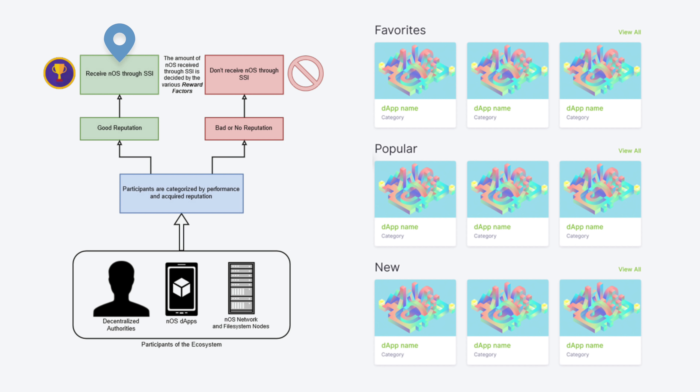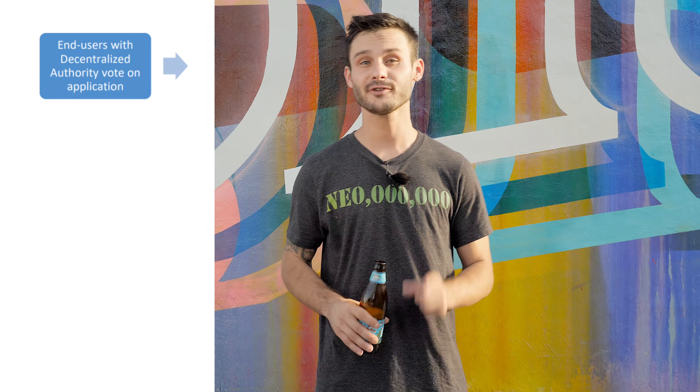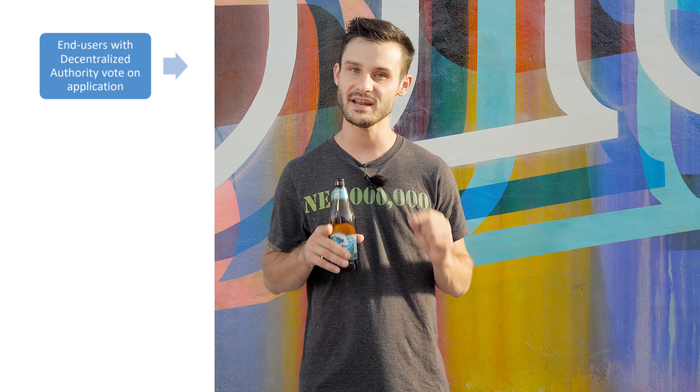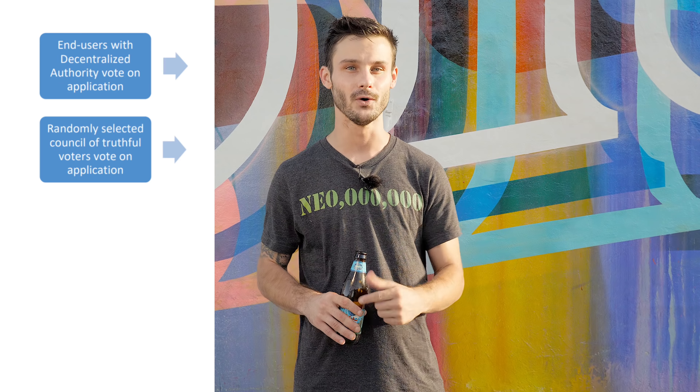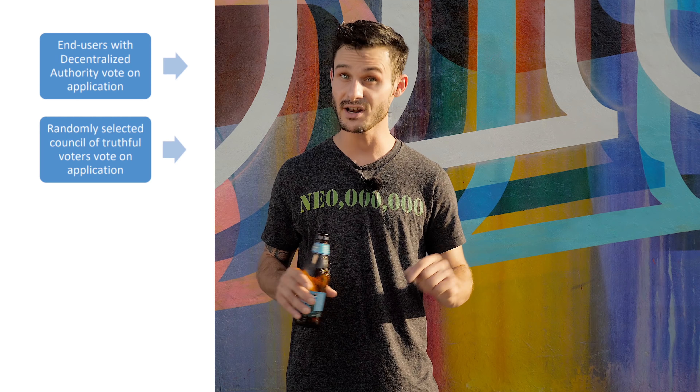End users of dApps can stake their nOS tokens to be granted a concept called decentralized authority. This allows users to rate applications based on quality and other relevant factors. Users are incentivized to vote honestly by distribution of tokens via selective supply increase — those who vote more truthfully in accordance with the eventual outcome receive relatively more nOS tokens. Truthful voters also gain voting power, which defines a user's voting weight. Applications themselves are also rewarded with the selective supply increase for establishing a positive reputation.